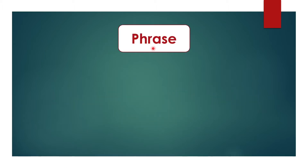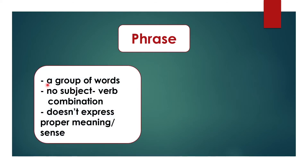First, let us know what is called a phrase. A phrase means simply a group of words. Here you will get several words together, but there is no subject-verb combination. This is the important definition for phrase. In a phrase, you will not get any subject-verb combination and it doesn't express proper meaning or doesn't make any sense. Simply, a phrase means a group of words where there is no subject-verb combination and where you will not get any meaning.